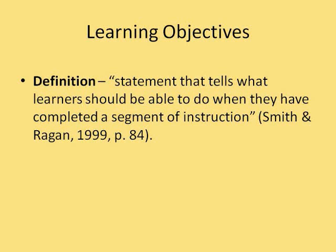By definition, a learning objective is a statement that tells what learners should be able to do when they have completed a segment of instruction. Most explicit learning objectives describe what learners can do to demonstrate that they have learned. What learners do must be observable so that the learners know that they have learned and what they have learned.